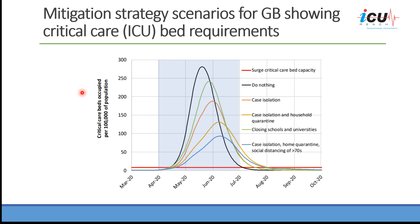Now we're going to measure this — and this is speculative, these are expectations — looking at mitigation strategy scenarios for the UK showing critical care beds requirement. In the UK, there are 8 critical care beds per 100,000 population. If we do nothing, at the peak we're going to require close to 270–280 critical care beds above capacity. Even with maximum mitigation — case isolation, home quarantine, and social distancing for at-risk patients — the peak would be around 90 beds, which is 10 times higher than health care capacity as measured by critical care bed numbers per 100,000 population.